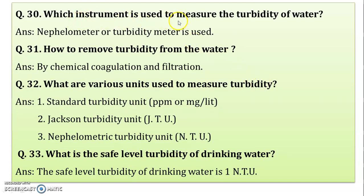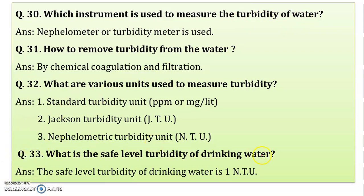Which instrument is used to measure the turbidity of water? This is experiment number 5 — determine the turbidity of a water sample by nephelometric method. Here we are using the nephelometer or turbidity meter to measure the turbidity of the water.